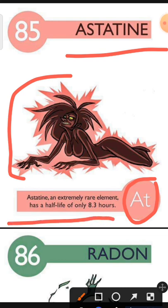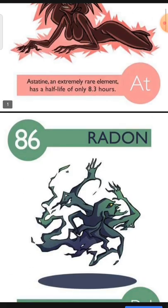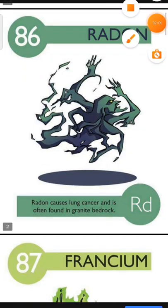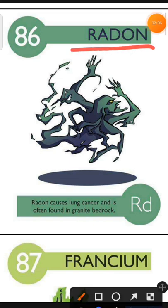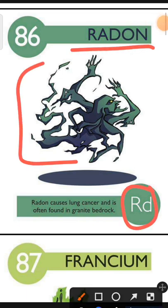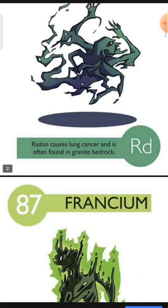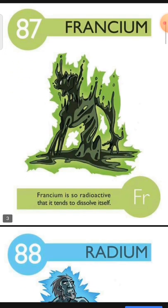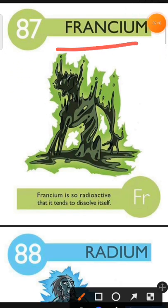Element number 86 is Radon. The characteristic of Radon is: Radon causes lung cancer and is often found in granite bedrock. Element number 87 is Francium. The characteristic of Francium is: Francium is so radioactive that it tends to dissolve itself.